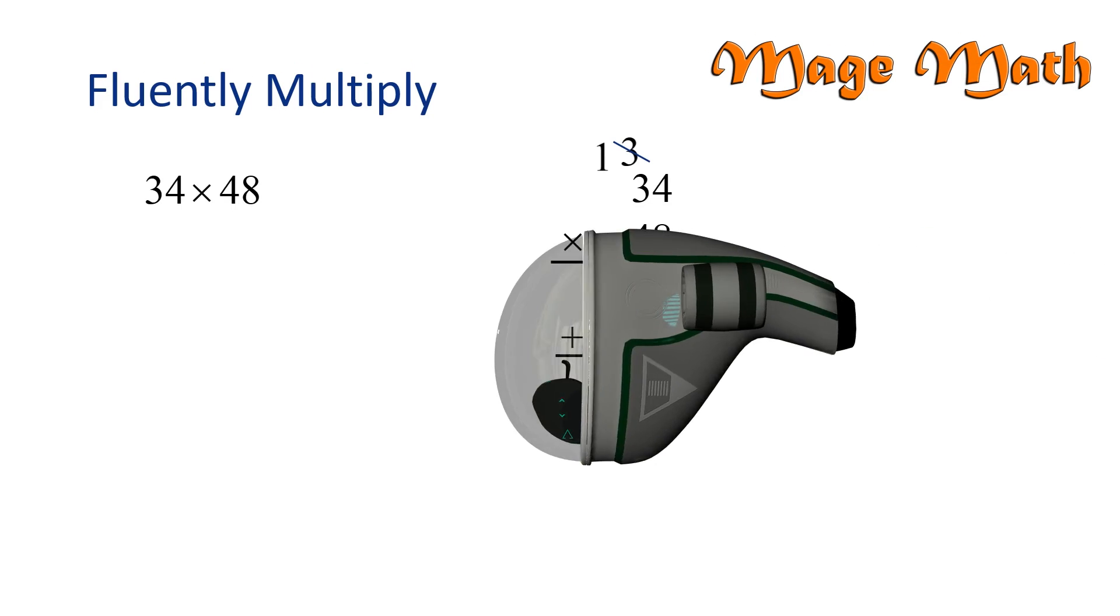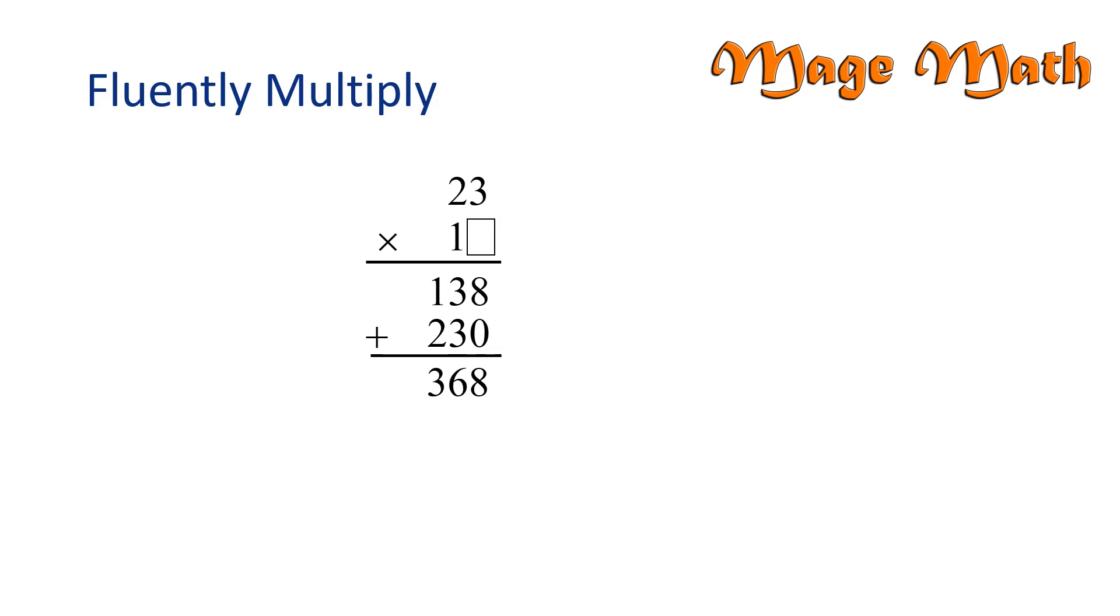Will you help me with this problem? Here we want to determine what number goes in the box. Looking at the problem, we need to find a number that when multiplied by three, we get eight in the ones digit. For example, three times two is six, so I know two is not the correct answer for the box.